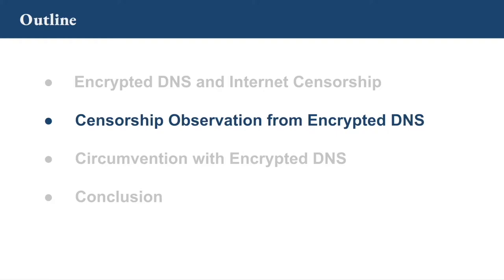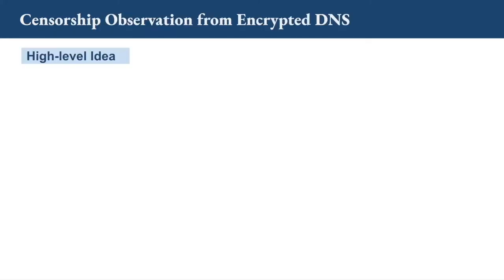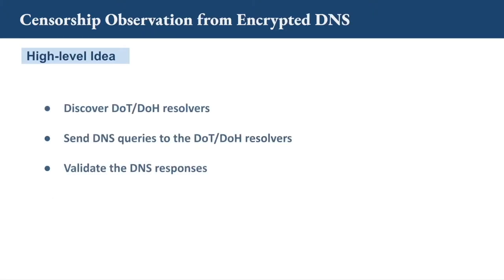Now let's look at our first experiment: censorship observation from encrypted DNS. To observe DNS manipulation from encrypted DNS, the high-level idea is to first collect a list of DoT and DoH resolvers, send DNS queries to those resolvers, and then check if the responses are manipulated.